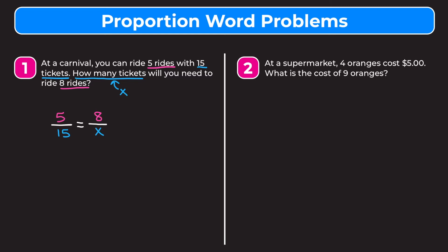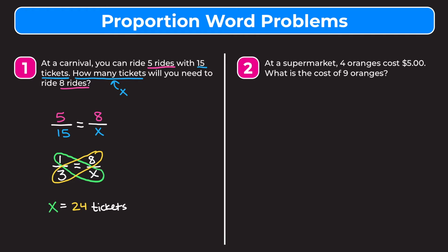We solve this proportion using cross multiplication. First, I simplify five over 15 by dividing top and bottom by five, giving one over three. This equals eight over x. Cross multiplying: one times x equals three times eight, so x equals 24. That means it costs 24 tickets to ride eight rides.